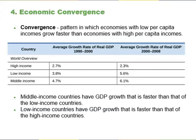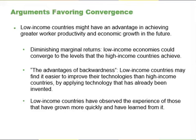Some low-income and middle-income economies around the world have shown a pattern of convergence, in which their economies grow faster than those of high-income countries. Will this pattern of economic convergence persist into the future? This is a controversial question among economists. Several arguments suggest that low-income countries might have an advantage in achieving greater worker productivity and economic growth in the future. A first argument is based on diminishing marginal returns. Even though deepening human and physical capital will tend to increase GDP per capita, the law of diminishing returns suggests that as an economy continues to increase its human and physical capital, the marginal gains to economic growth will diminish.